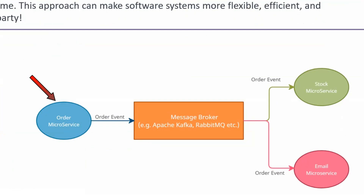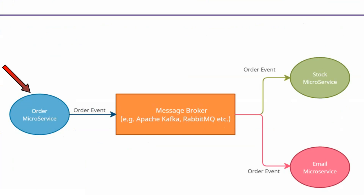Here you can see an order microservice which will act as a producer. The order microservice produces order events and sends them to a queue or topic of a message broker. Examples of message brokers are Apache Kafka, RabbitMQ, etc.